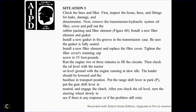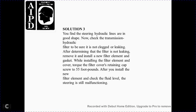Situation 3: Check the hydraulic lines and filter. First, inspect the hydraulic lines for damage or deterioration. Next, remove the transmission hydraulic system oil filter cover, pull out the rubber packing and filter element as shown in Figure 16. Install a new element and gasket, being sure the gasket is fully seated. Install the new filter element and replace the filter cover, tightening the pertaining cap screws to 55 foot-pounds of torque. Return the engine and run for 2 to 3 minutes to fill the circuits, then check the oil level with the tractor on level ground with the engine running at slow idle. The loader should be lowered in the transport position, with the range shift lever in park and the gear shift lever in neutral with the clutch engaged. After checking the oil level, determine if the steering wheel has any response. Solution 3: The steering hydraulic lines are in good shape. The transmission hydraulic filter is checked for clogged lines. After determining the filter is not leaking, remove and install a new filter element and gasket, torquing the filter cover cap screws to 55 foot-pounds of torque.